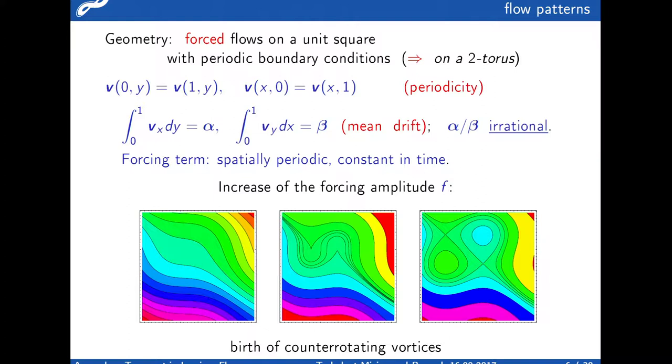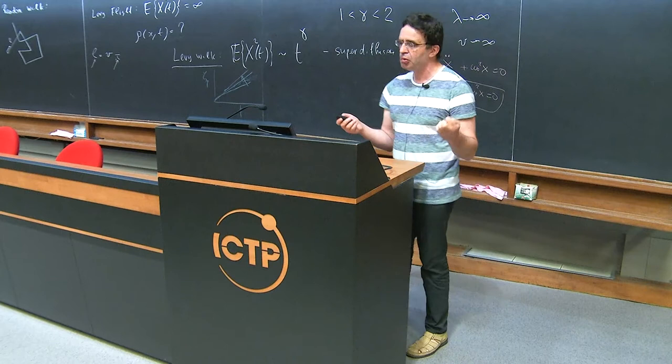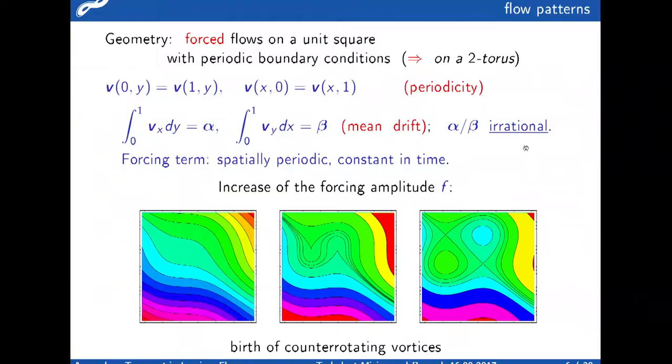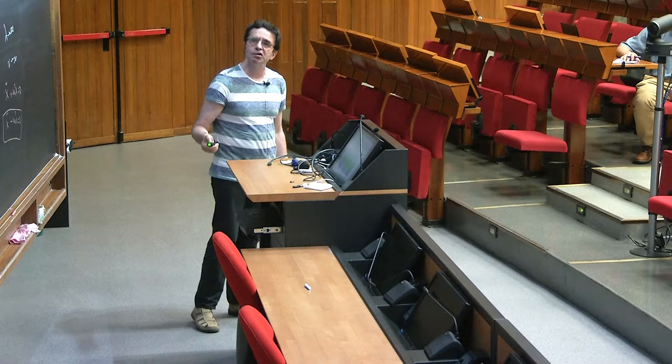I will consider forced flows on a unit square with periodic boundary conditions. A square with periodic boundary conditions is a two-dimensional torus. I impose periodic boundary conditions and would like to have mean drift. I would like the ratio between the rates of drift to be irrational. The forcing term is spatially periodic, constant in time, and very simple - trigonometric, sinusoidal in x and sinusoidal in y.